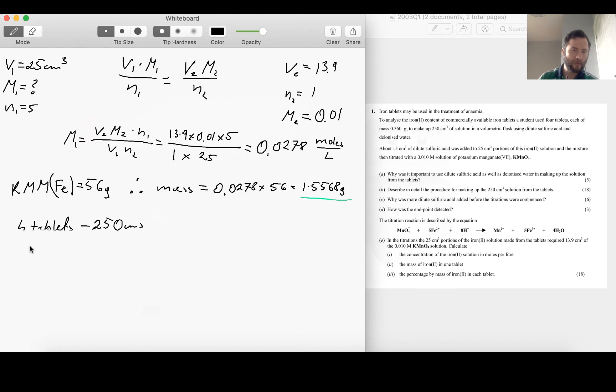So we require 4 tablets for 250 cubic centimeters, and if we wanted to make up 1000 cubic centimeters we would require obviously 16 tablets. So then what that means is that mass of iron per tablet is equal to 1.5568, the mass of iron that would make up one liter, divided by number of tablets required to make up the same solution in one liter, divided by 16.